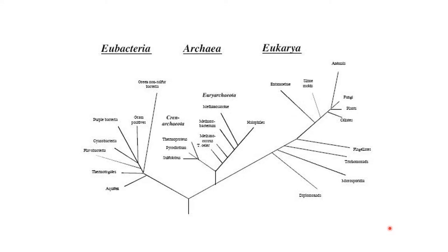Looking at a phylogenetic tree, we can see the origin of life at the bottom and animals at the top. All of eukarya — fungus, plants, animals, protista — is on one branch. Archaea branches off more recently than eubacteria did. Life diversified from a common ancestor into groups: some became eubacteria, and others became the common ancestor of archaea and eukarya, which later diverged.